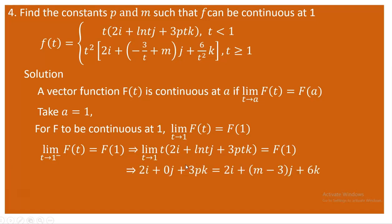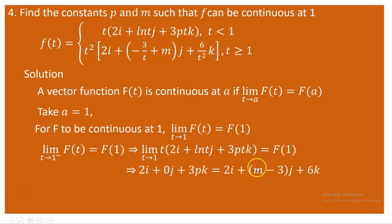The limit of this function is obtained by direct substitution with t equal to one. When t is one, we get 2i plus 0j plus 3pk. And f of one uses the second condition — when t is one, we have 2i directly. For the j component, m minus 3 comes. For the k component, 6 divided by 1 is 6k. So now we are left with two equivalent vector expressions.